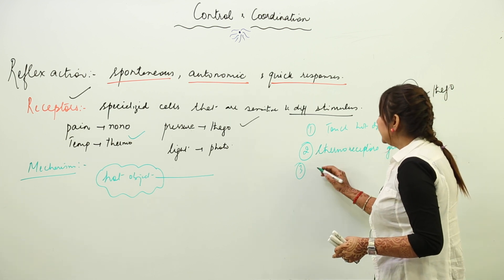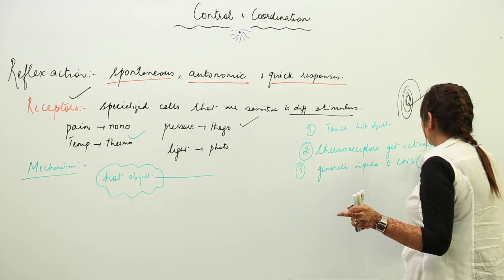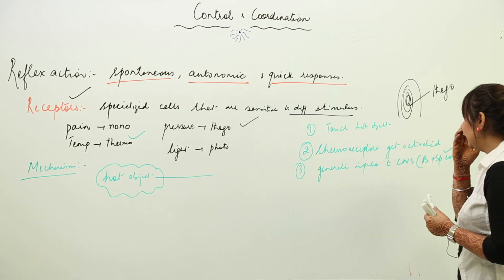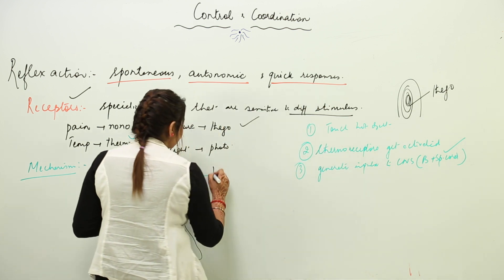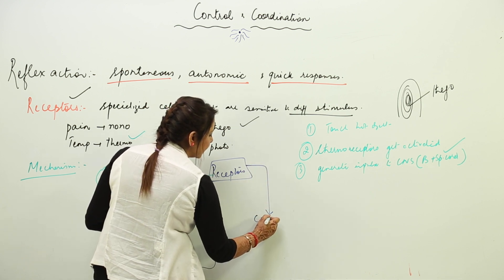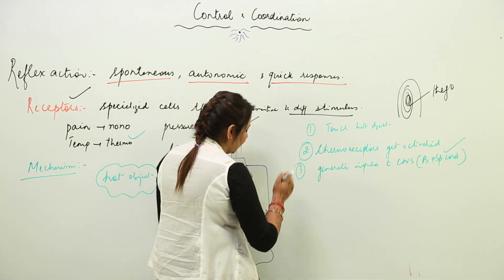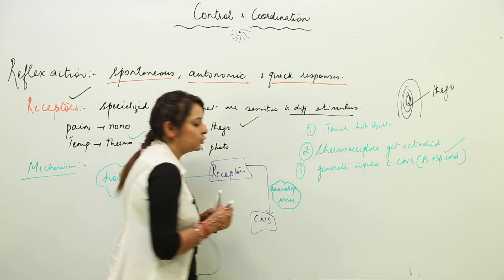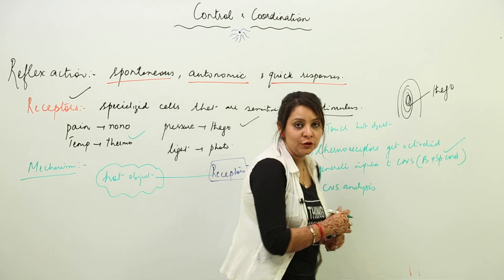Most reflex actions are handled by the spinal cord, but in general we refer to the CNS — the central nervous system. The receptors generate an impulse to the CNS, and the nerve that carries this impulse from the sensory organ to the CNS is called the sensory nerve.